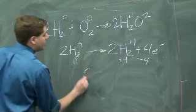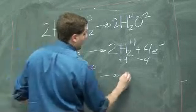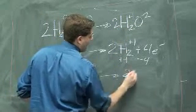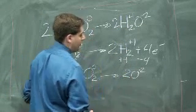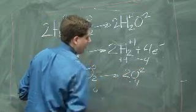In writing the same system for the oxygen, I start with O2 with a zero charge, and I become 2O with a minus 2 charge. Again, my net charge here is zero, and my net charge here is minus 4.